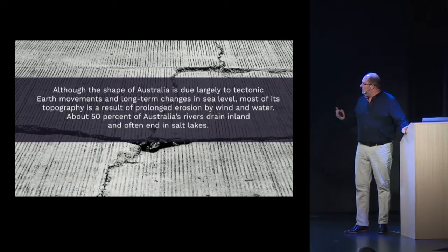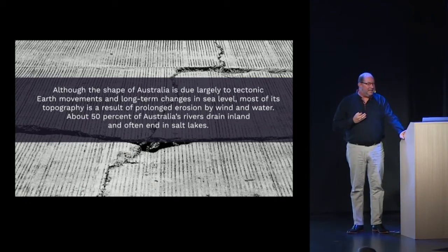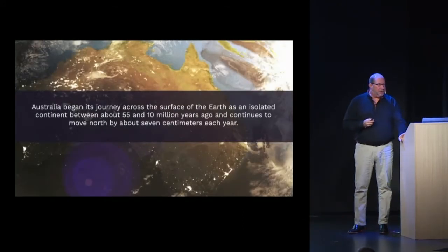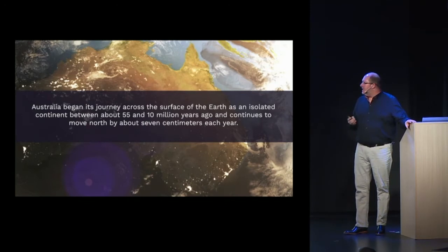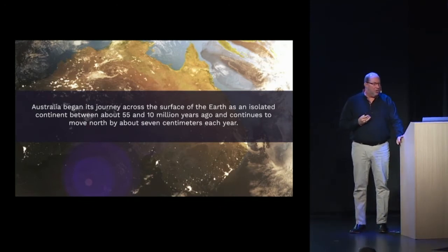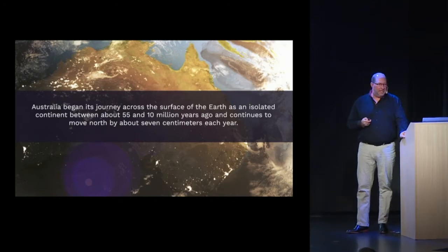Almost 50% of Australia's rivers often drain inland and end in salt lakes. Australia began its journey across the surface of the earth as an isolated continent about 55 to 10 million years ago, and continues to move north by about 7 cm each year.